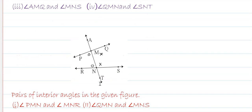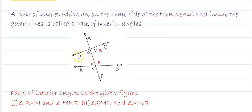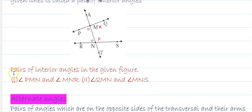Next, interior angles. A pair of angles which are on the same side of the transversal and inside the given lines is called a pair of interior angles. In this figure, the first pair is angle PMN and angle RNM, and the second pair is angle QMN and angle MNS. These are the two pairs of interior angles.